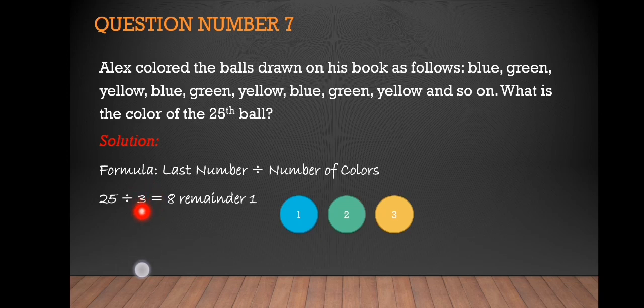If eight is the answer with no remainder, that means the color of the last ball is yellow. But since it's divisible by three with remainder one, that means we are going to count again starting from blue.